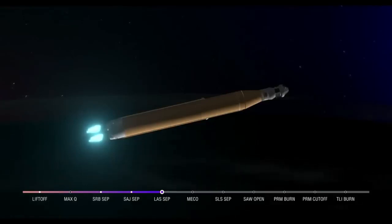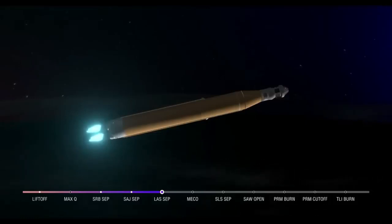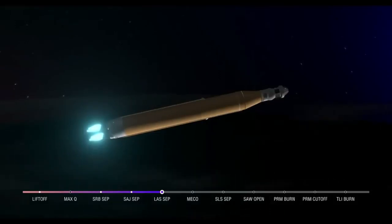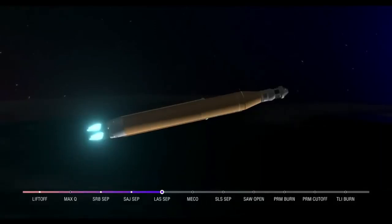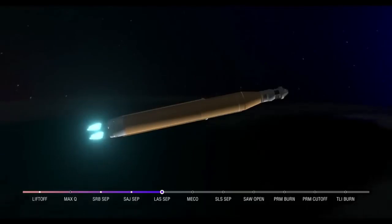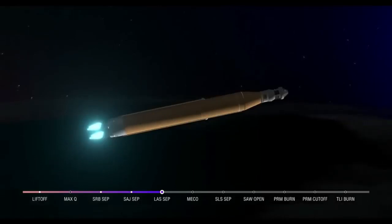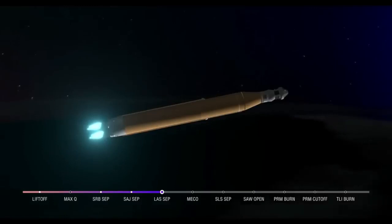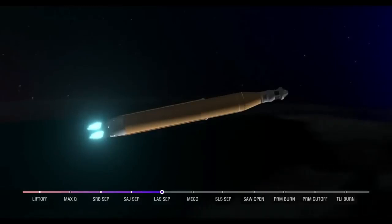As we prepare for main engine cutoff, the four RS-25 engines are beginning to throttle down. 30 seconds now until core stage main engine cutoff. All four engines continue to throttle down. Now 7 minutes, 45 seconds into the flight, traveling over 16,000 miles per hour. Continuing to hear good calls here in Mission Control Houston. We're standing by for core stage main engine cutoff.